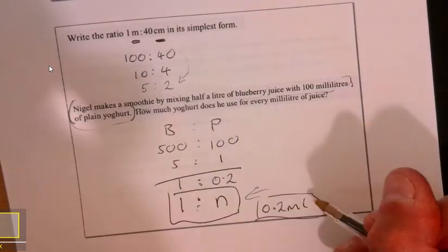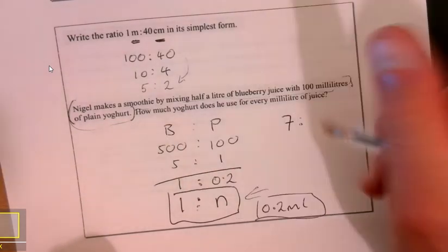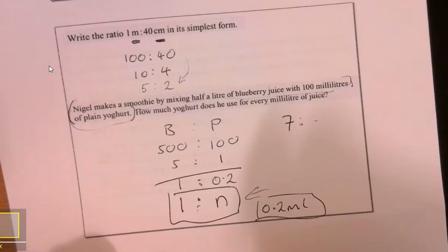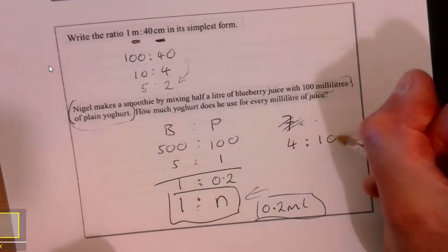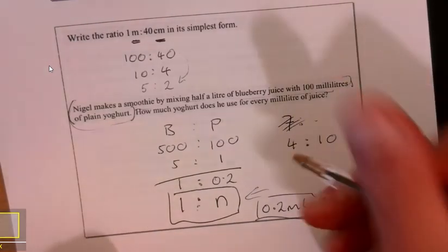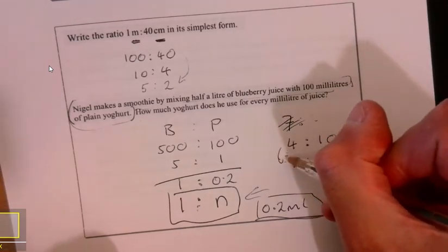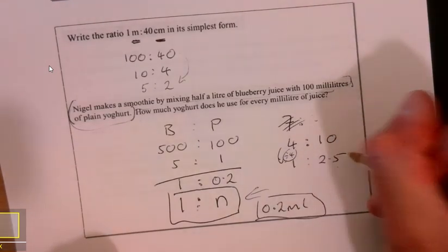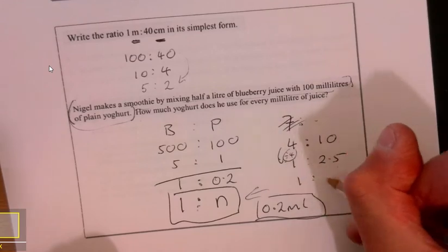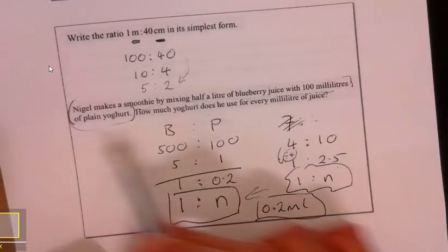When you get this question and it says write it as one to n, all you got to do is, for example, if you had four to ten, and I want to write it like one to something, I've divided that by four. So if I divide this by four, ten divided by four is two and a half. That's all that means. But it's when it gives it this context like this that's when it gets a little bit more confusing.